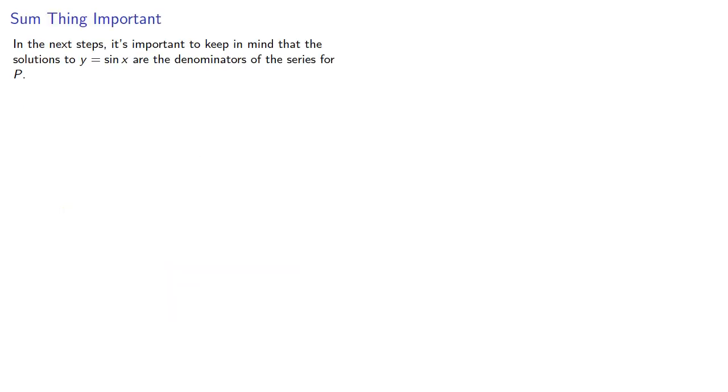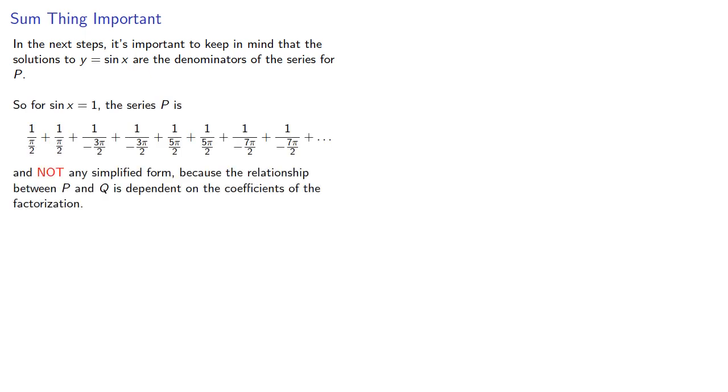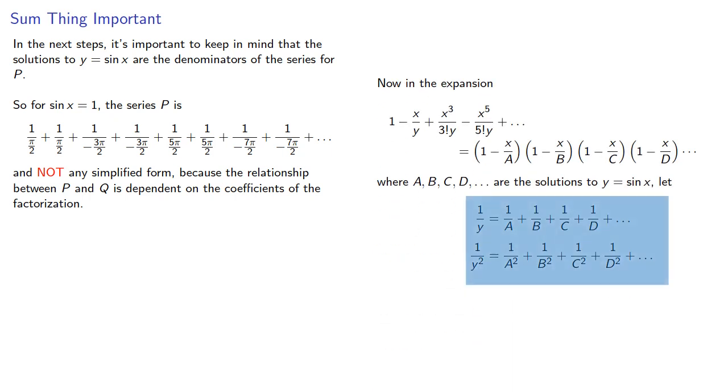Now, in the next step, it's important to keep in mind that the solutions to y equals sine x are the denominators of the series for p. So for sine x equal to 1, the series p uses the unsimplified form, because the relationship between p and q that we're using is dependent on the coefficients of the factorization.